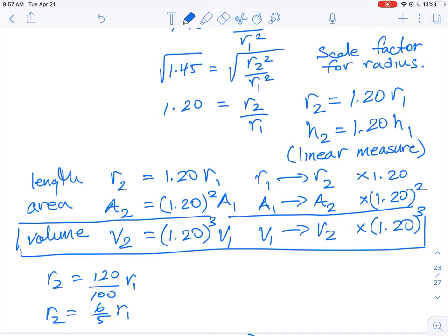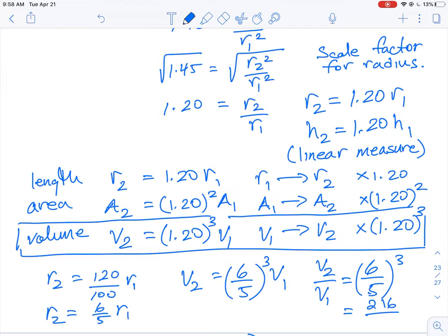So instead of 1.2, we would put in a factor of 6 fifths cubed. So we can then say that volume 2 is equal to 6 fifths cubed of volume 1. Or if we want to just write it as a ratio of V2 over V1, which is what they're giving you in the answer key, it is just 6 over 5 cubed, which turns out to be 6 cubed is 216 and 5 cubed is 25 times 5, which is 125. So that is how they derive that fractional answer.